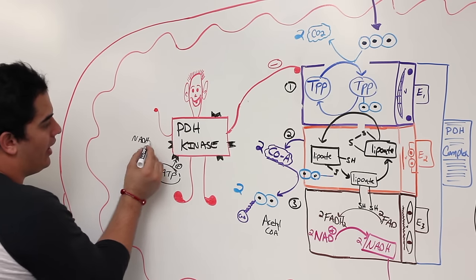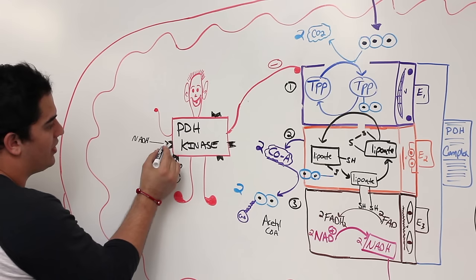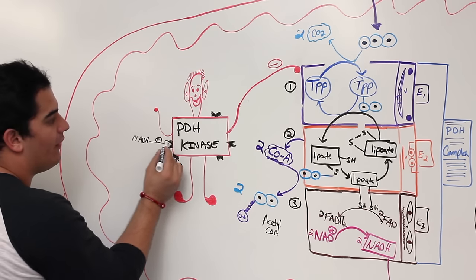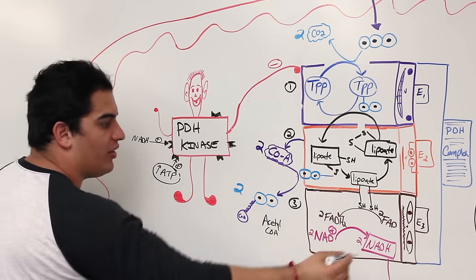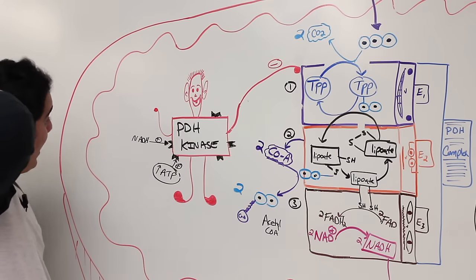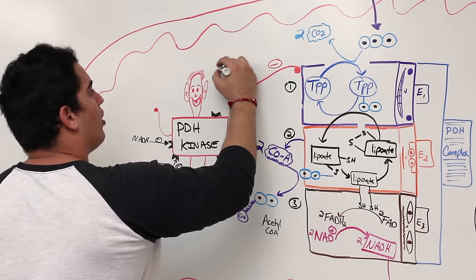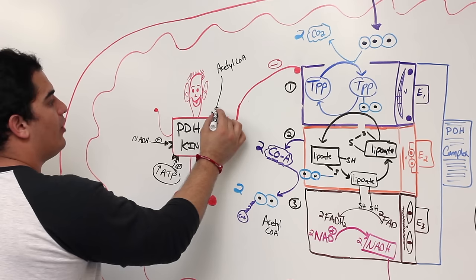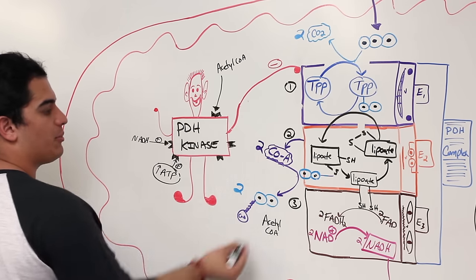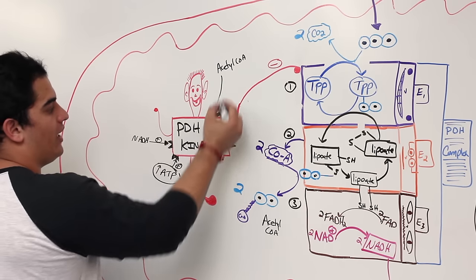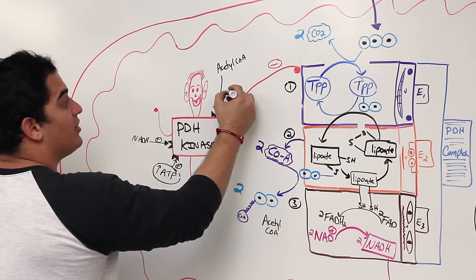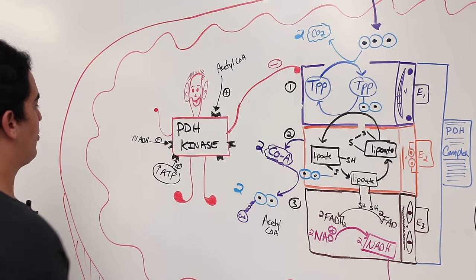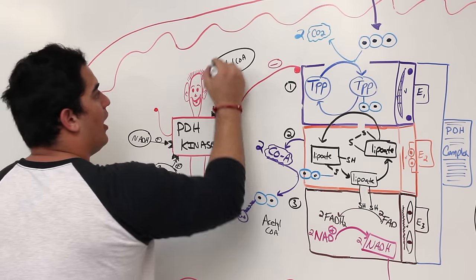NADH can also bind to PDH kinase — if too much NADH is produced in the Krebs cycle, it stimulates PDH kinase, which inhibits enzyme one and decreases NADH production. Similarly, if too much acetyl-CoA is present, it also stimulates PDH kinase to slow the process down.